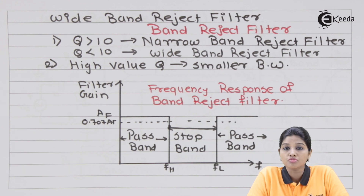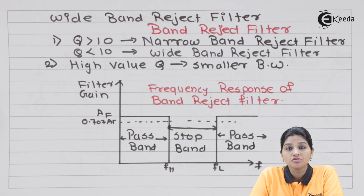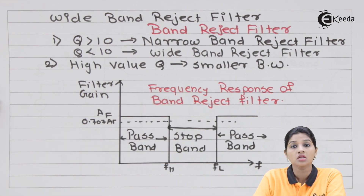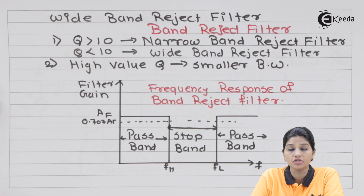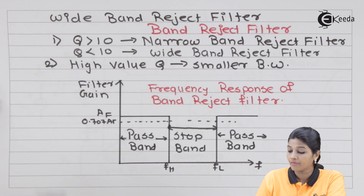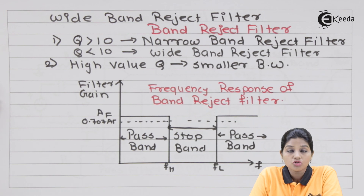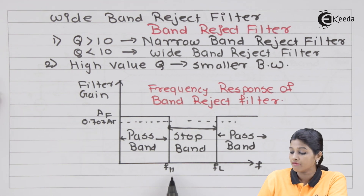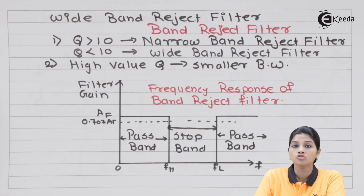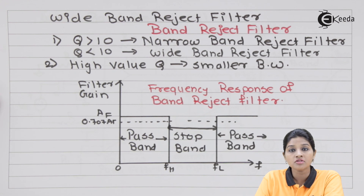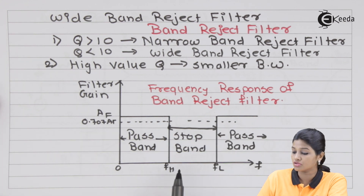The frequency response of a band reject filter is a graph between filter gain and frequency. Frequency is plotted on the X axis, whereas filter gain is plotted on the Y axis. The filter gain can be output voltage divided by input voltage. In case of a band reject filter, two frequencies are required to be defined: FH and FL. The stop band is present between those frequencies. For frequencies from 0 to FH, the gain of the filter is equal to AF. At F equal to FH, the gain suddenly reduces to 0.